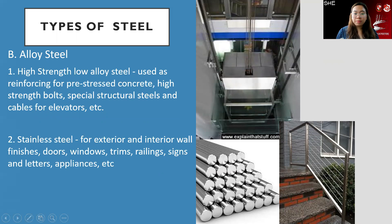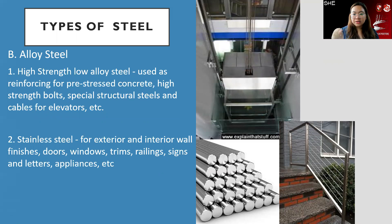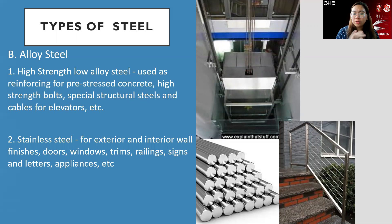The very popular stainless steel is used for exterior and interior wall finishes, doors, windows, streams, railings, signs and letters, appliances, and more. It won't rust, which is its main advantage, and is commonly seen in exterior railings. Some clients even request stainless steel for indoor stairs, though it is significantly more expensive than GI steel and requires a different welding method. A practical approach is to use GI for interior elements and stainless steel for exterior ones.